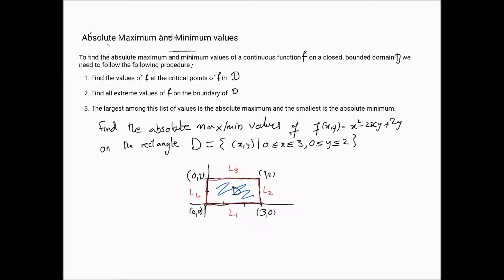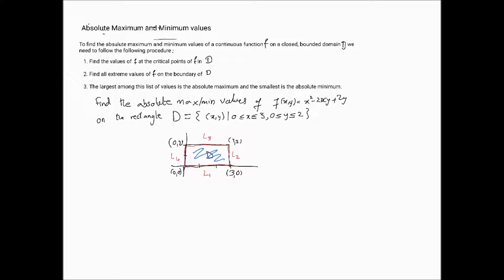Now let's calculate. Step 1: we compute fx = 2x − 2y, set equal to 0, and fy = −2x + 2, also set equal to 0. From the second equation, x = 1. Substituting into the first gives y = 1. So the only critical point is (1, 1), and f(1,1) = 1 − 2 + 2 = 1.